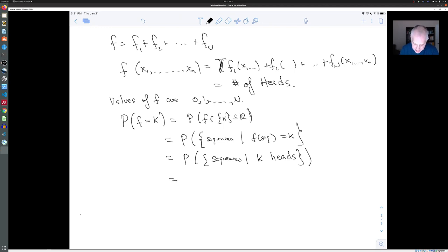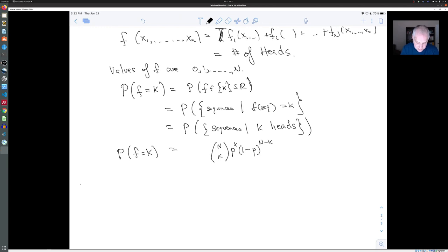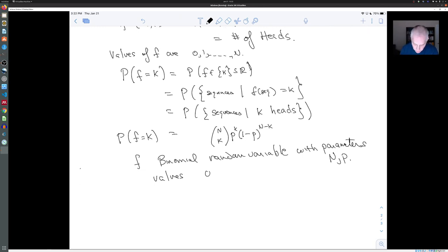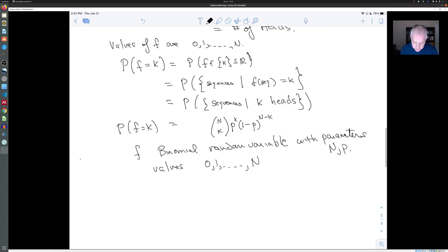And this we've seen before in our discussion of the binomial distribution. There are n choose k sequences with k heads. And we know that each sequence has probability P to the k, one minus P to the n minus k. And so we see that the probability of f equaling k is n choose k, P to the k, one minus P to the n minus k. And for that reason, f is called the binomial random variable with parameters n and P. So its values are 0, 1, up to n. And the probability of it taking any one of those values is given by this binomial distribution that comes from sequences of coin flips.